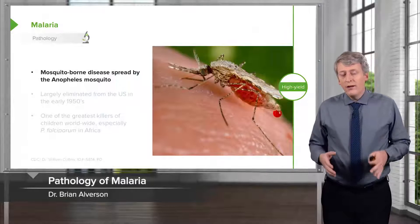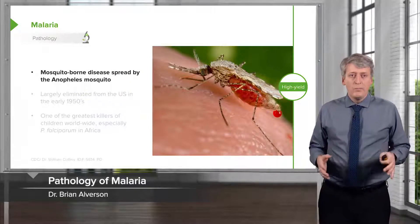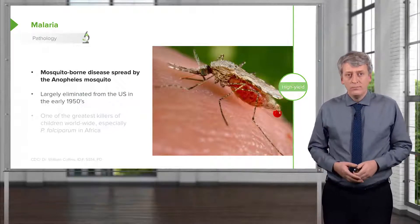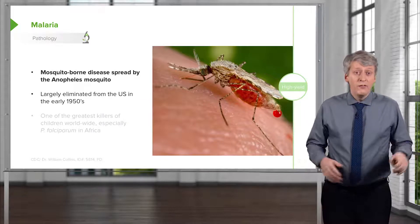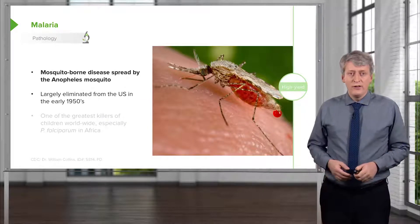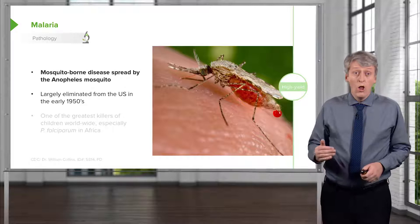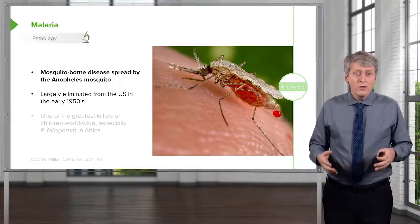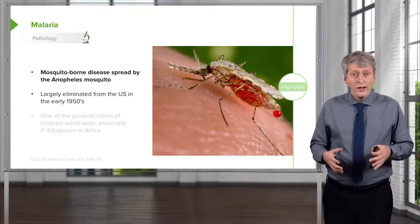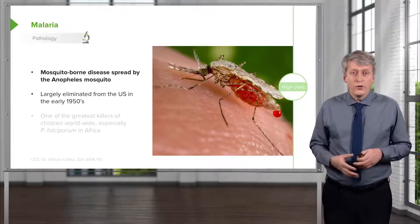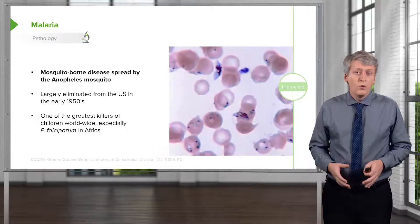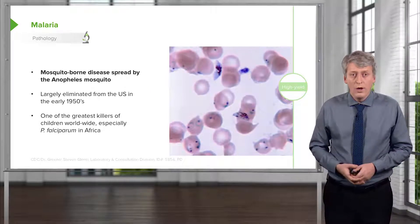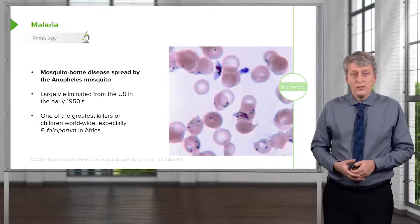In this lecture, we're going to discuss malaria. Malaria is a disease that's spread by the Anopheles mosquito. This was largely eliminated from the United States in the early 1950s — it used to go as far north as Rhode Island — but now it's mostly gone. Nonetheless, it's prevalent throughout other countries in the world and is one of the greatest killers of children worldwide, especially P. falciparum in Africa.